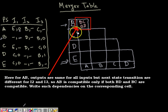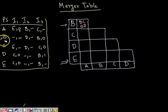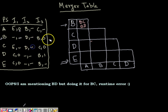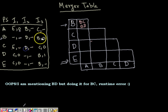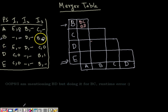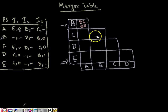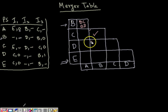For cell B-D: not specified — compatible; not specified — compatible; zero and zero — same. The outputs do not differ. For the next states: not specified and E are same; next is same; B and C differ, so B-D is compatible only if B-C is compatible — which is trivial since we are already in the B-C cell. So we put a tick mark for B-C.